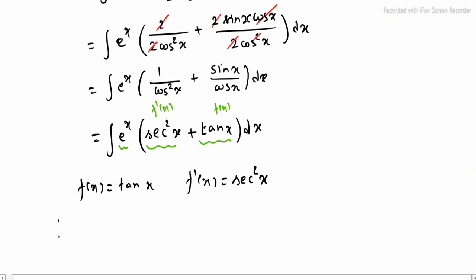So integrating e^x into (f(x) + f'(x)) dx, where f(x) is tan x and f'(x) is sec² x, can be written as e^x times the function.